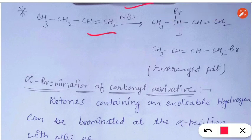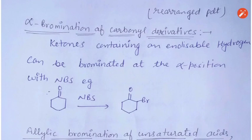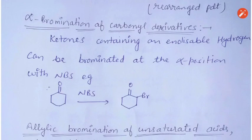In another reaction, butene reacts with N-Bromosuccinimide to form two products: 3-bromobutene and 1-bromo-2-butene. The first compound is formed by normal allylic bromination, while the second compound is formed due to allylic rearrangement, because the rearranged product is a more stable alkene according to Markovnikov's rule.